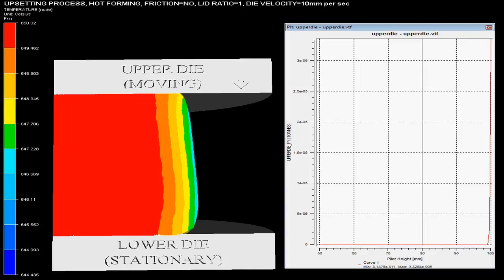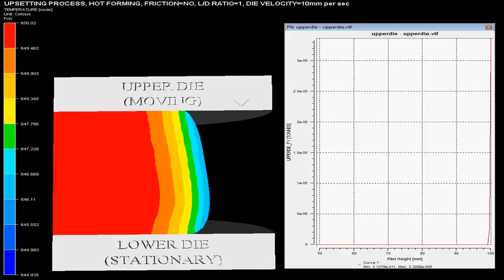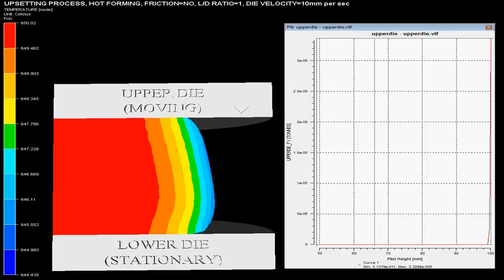Zero friction for billet and dies is shown on the top and in the video. The upper die presses with the velocity of 10 mm per second with lower die stationary.